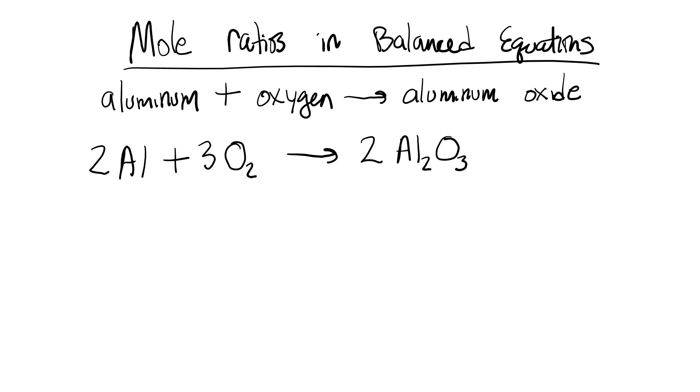However, we've just increased the number of aluminum to 4 on the product side. So we can remedy that situation by deleting the 2 and putting a 4 in front of the aluminum. And this is our final balanced equation.